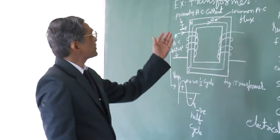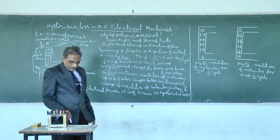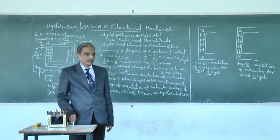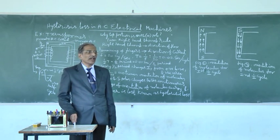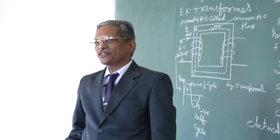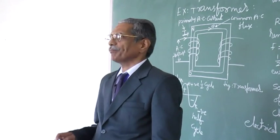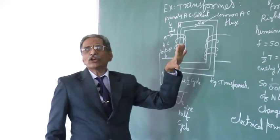Today we will discuss the hysteresis loss in AC electrical machines. Actually it is a part of core losses. Core losses are two types: hysteresis loss and eddy current loss. Eddy current loss of course, it is a separate discussion. Hysteresis loss means it will be in the core.